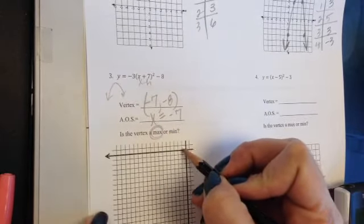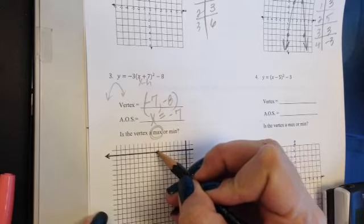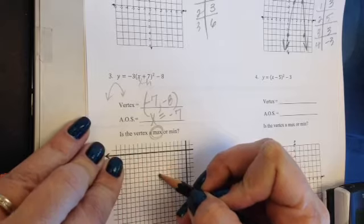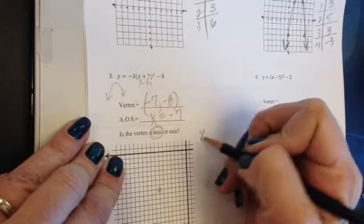This parabola is going to open down. That's going to put the vertex at a maximum. Negative 7, negative 8. Setting up my graph axes to negative 7 and down 8, my vertex will sit there.